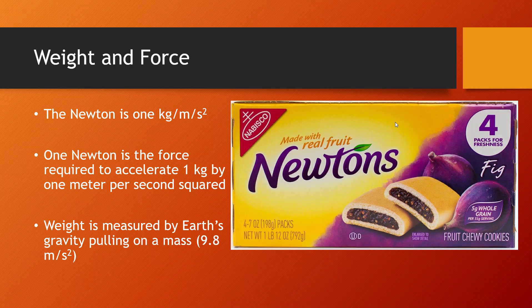We're going to get into acceleration more in physics and physical science. We actually measure weight in newtons, not in grams. Grams are a measurement of mass. Weight is the measurement of how that mass is affected by Earth's gravity, which is 9.8 meters per second squared — that's an acceleration.